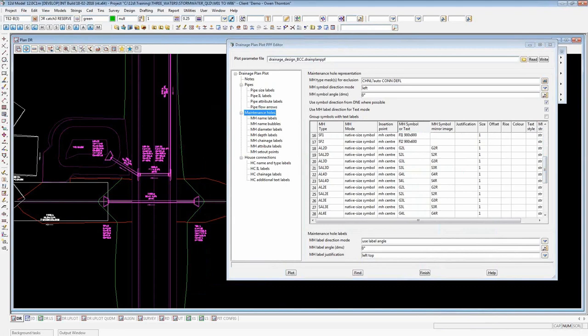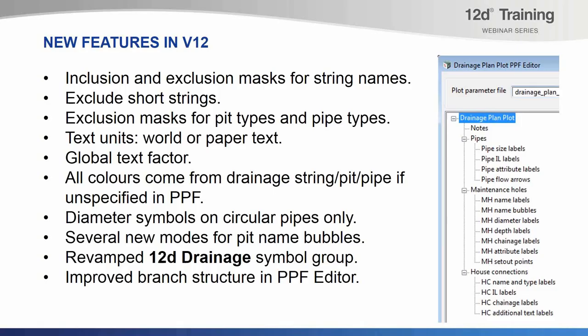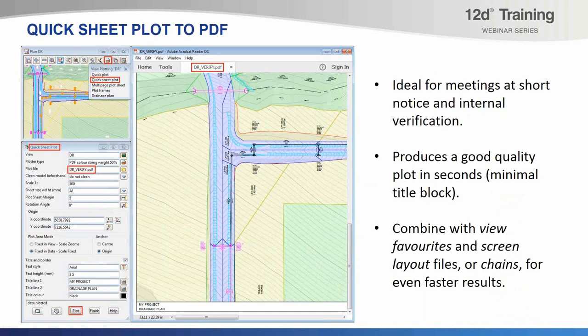That's a summary of the new features in version 12. I'd now like to show you how you can quickly produce something to show to somebody who may not have 12D — your project manager, internal verifier, or someone who needs to see what you've got in five minutes. I'm going to demonstrate the use of the quick sheet plot to show how you can very quickly produce something and get it out of 12D onto a PDF that can be sent to a printer or emailed to someone.